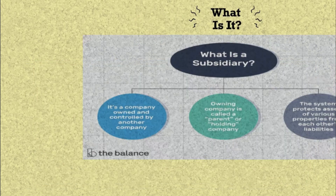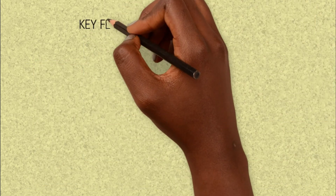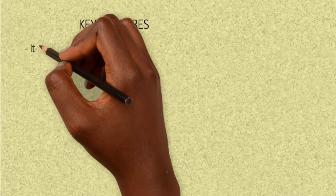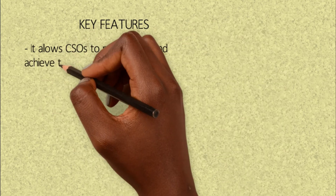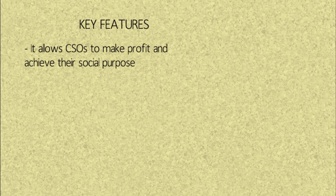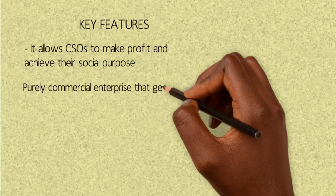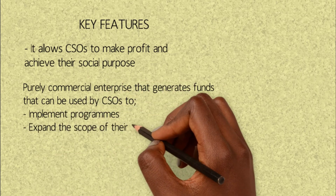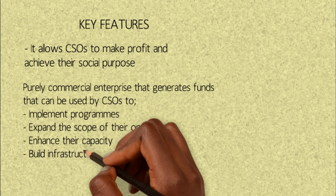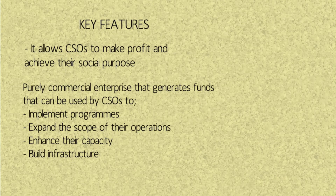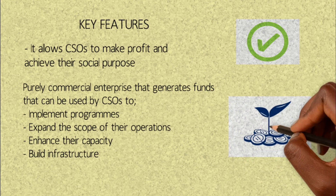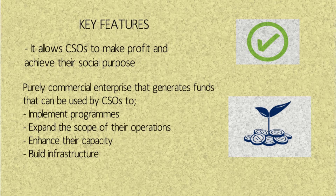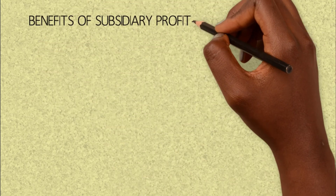Remember, the profits generated are used to run the affairs of a civil society organization. Some key features of this model are that it allows civil society organizations to make profit and achieve their social purpose. It is purely a commercial enterprise that generates funds that can be used by organizations to either implement programs, expand the scope of their operations, enhance their capacity, go for trainings, recruit more staff, buy equipment for the organization, build infrastructure, construct your building, and put up adequate facilities needed to operate as a civil society organization.